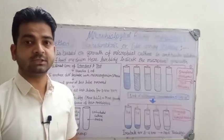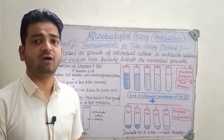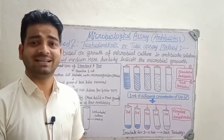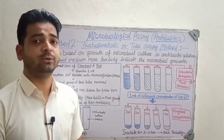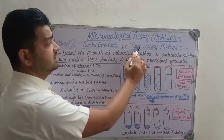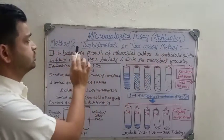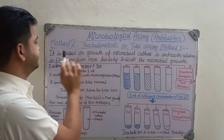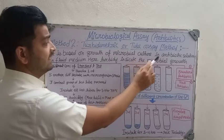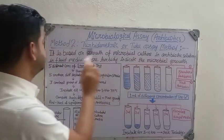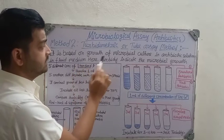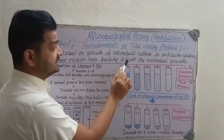Hello students. Now we are going to discuss about the microbiological assay of antibiotics. In the last class we have seen the cup plate method or cylinder plate method. Here we are going to discuss about the turbidimetric or tube assay method — that is Method 2. As the name indicates, it is based on the growth of microbial culture in antibiotic solution in fluid medium.